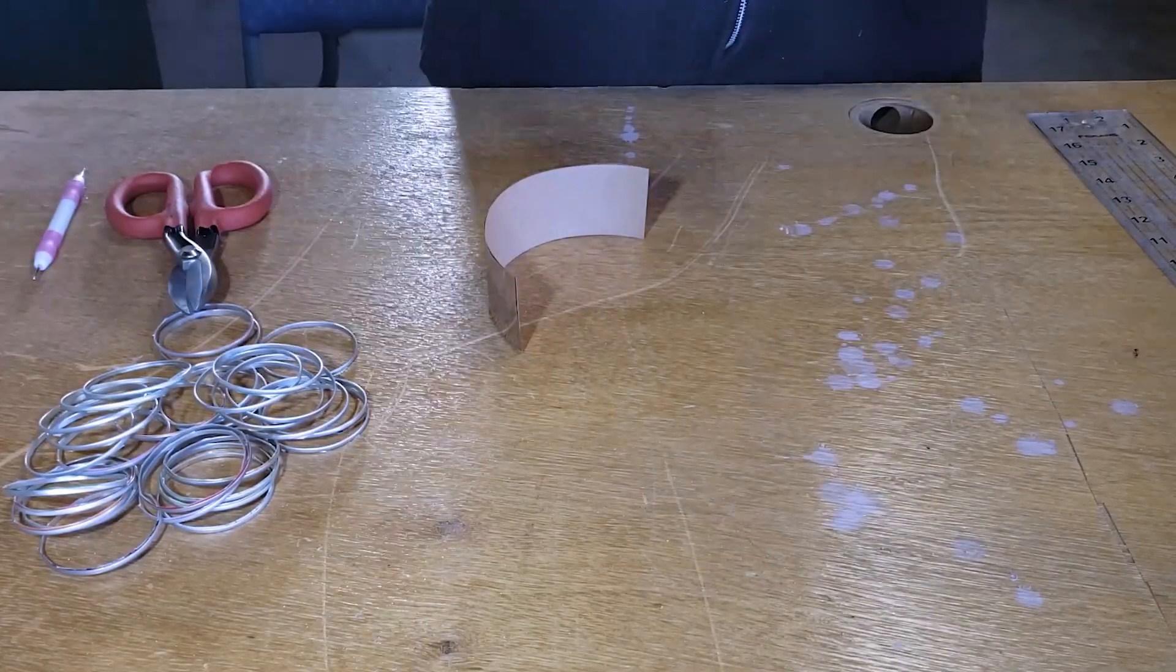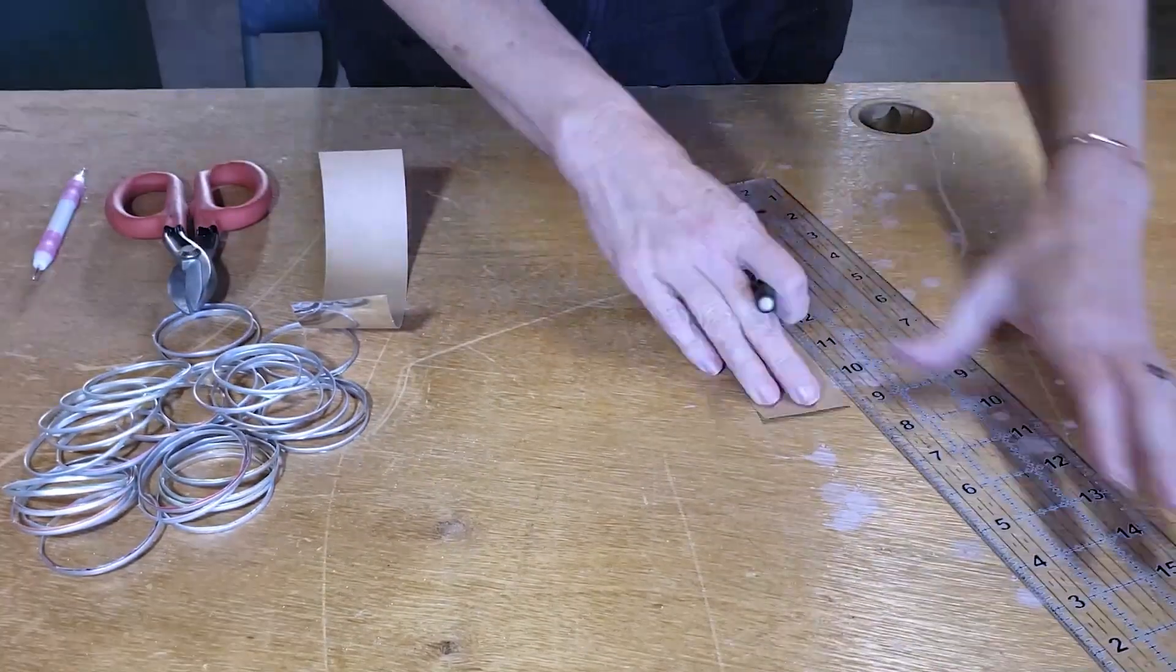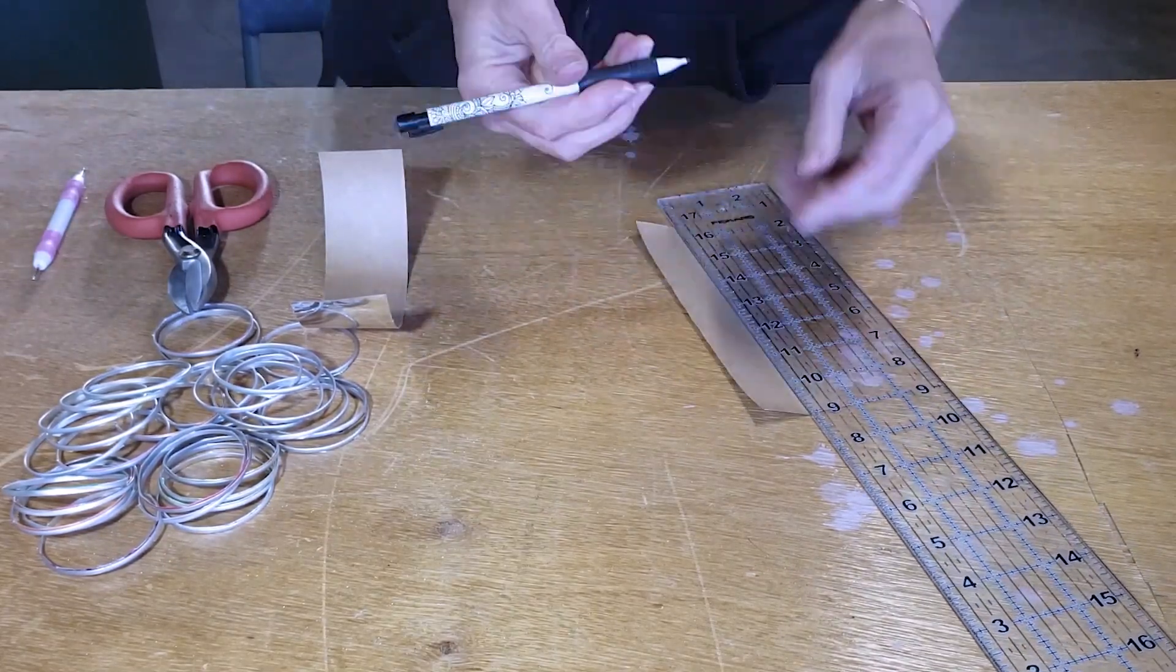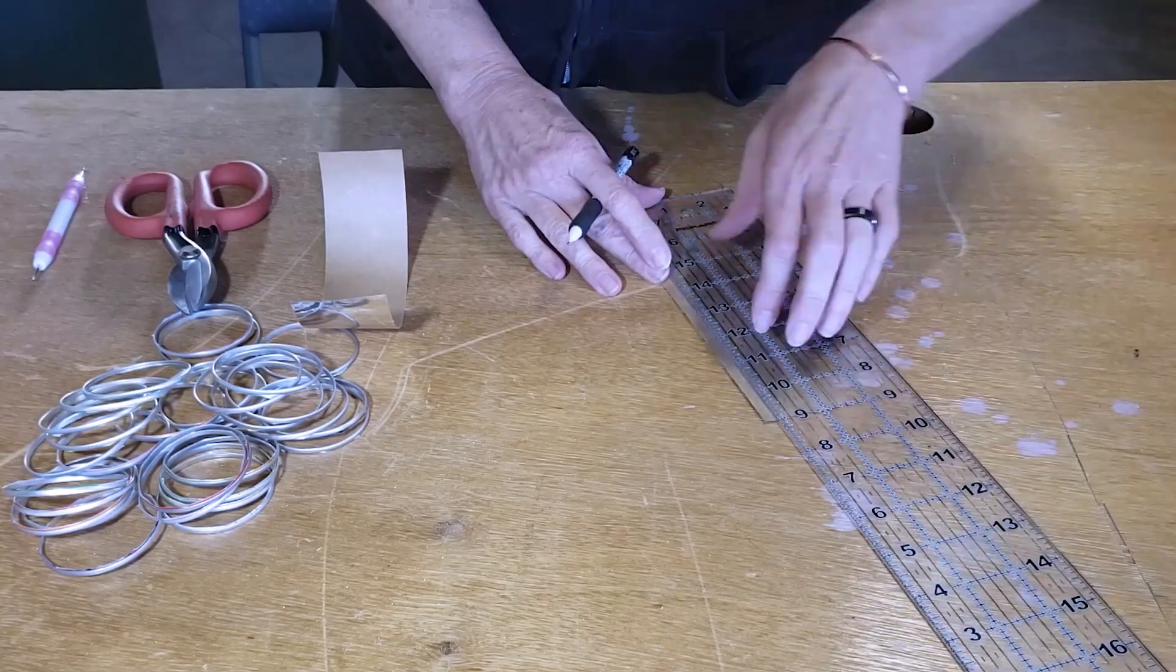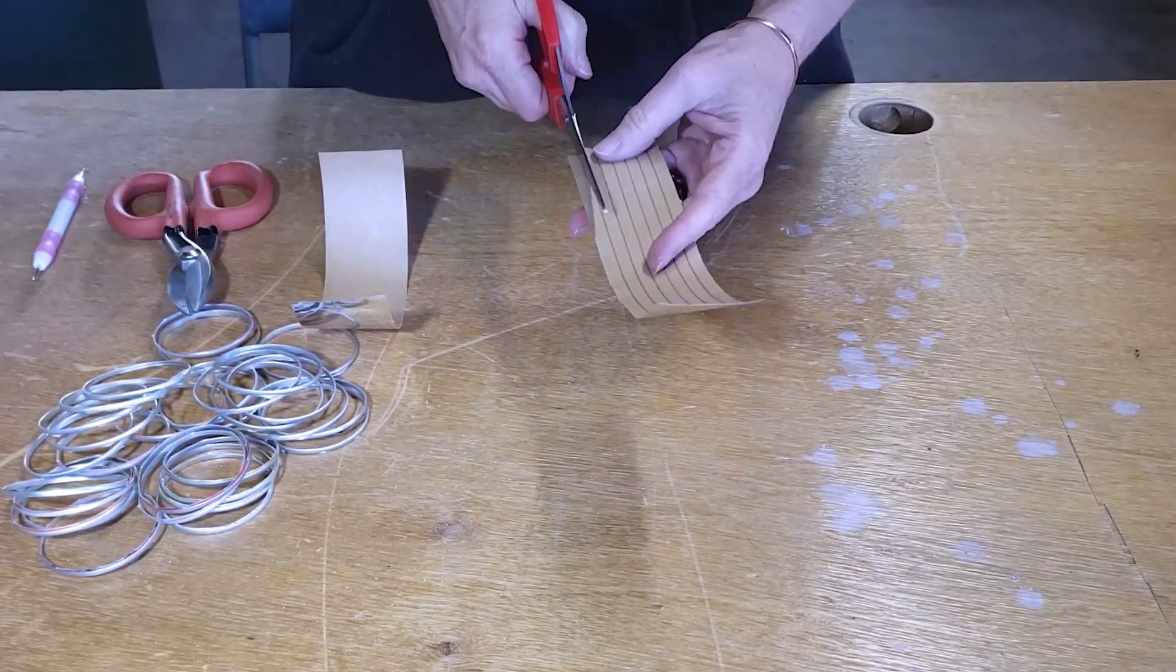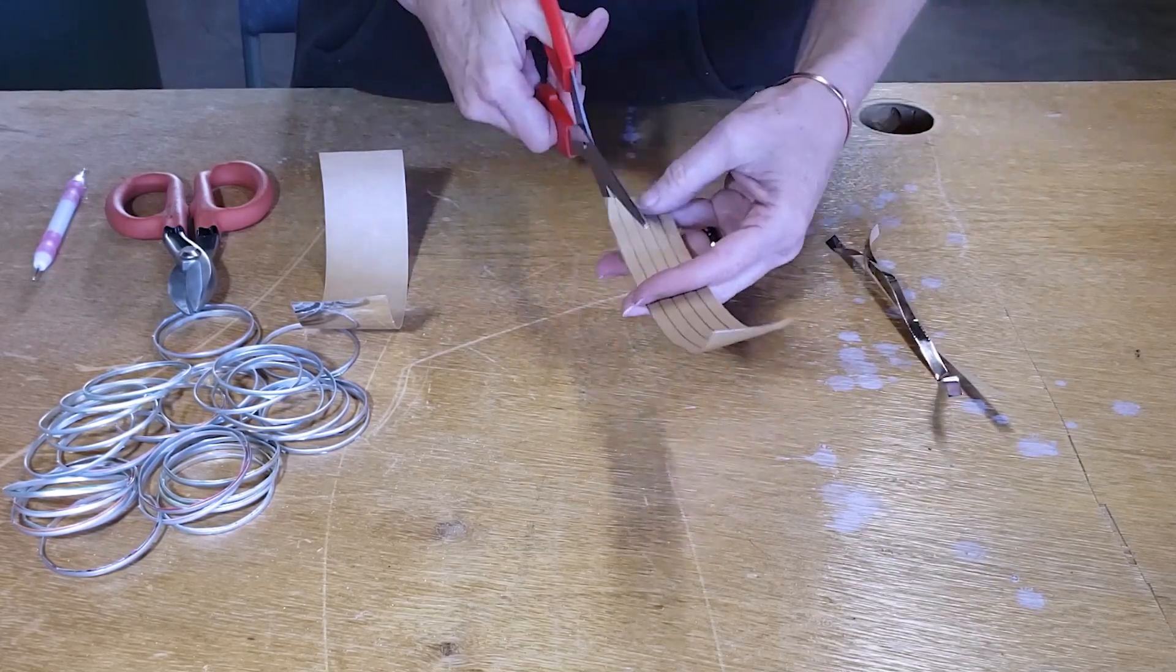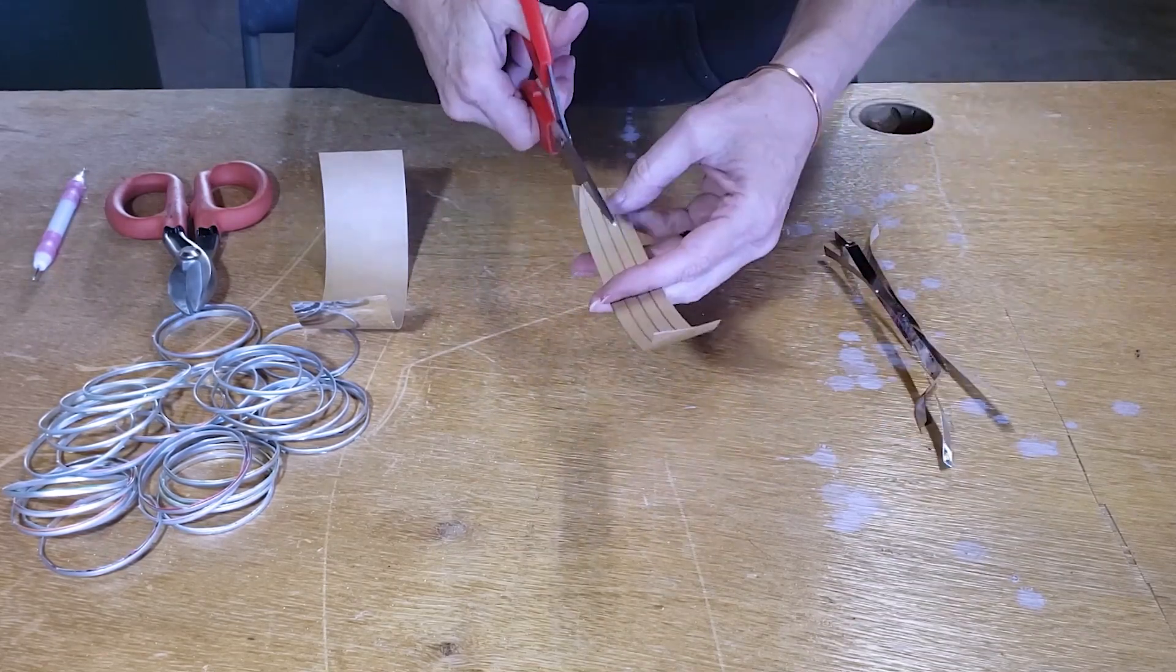I'm going to be using some metal tape again and I want to cut the tape long enough to go around the rings which is about seven inches long and then because this tape has paper backing it's really easy to mark and cut so I'm going to cut the tape into long strips one quarter of an inch wide.